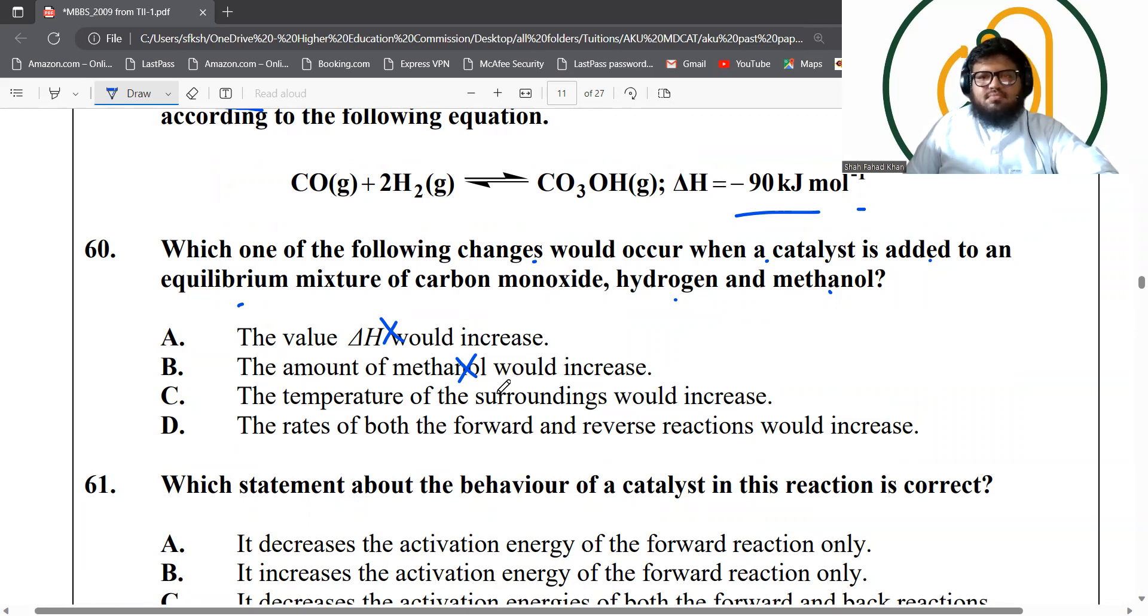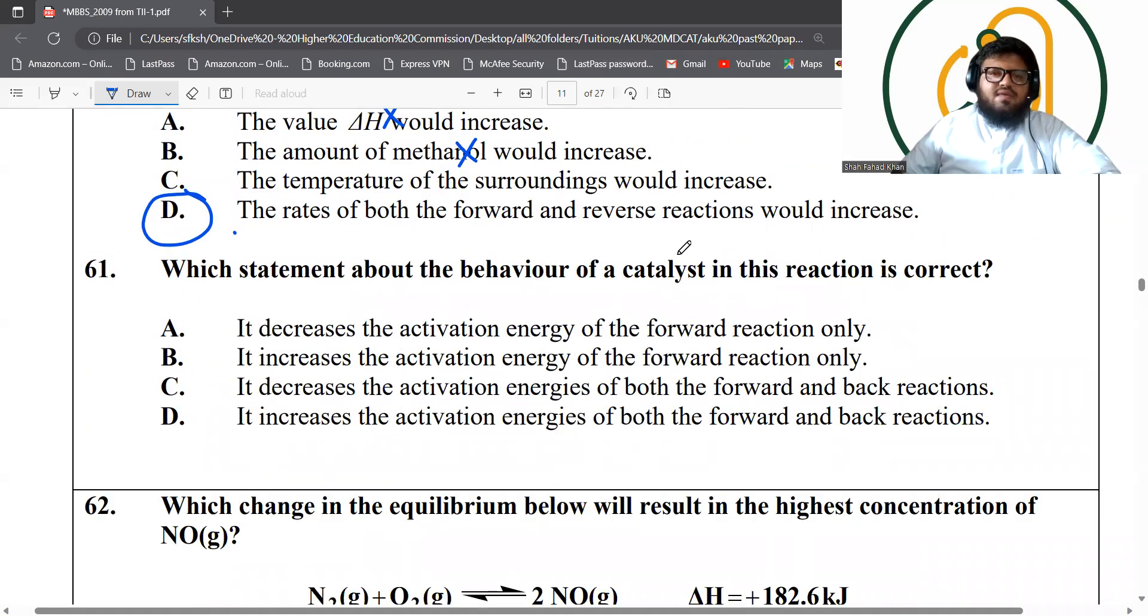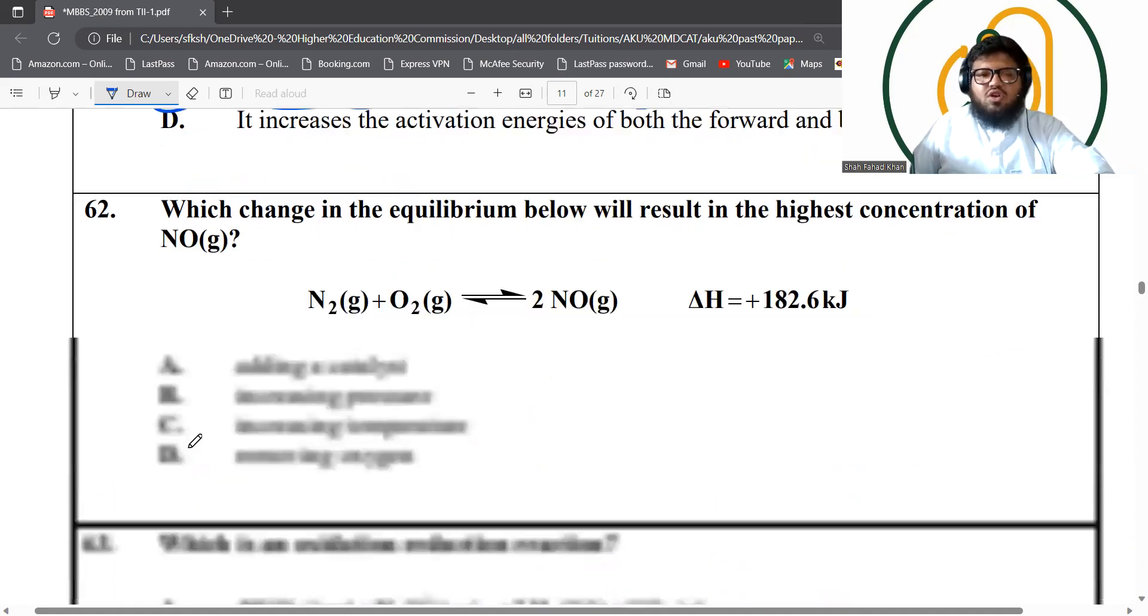Temperature, again, the rate of both forward and backward reaction would increase. That's the best answer. This statement about the behavior of a catalyst in this reaction is correct. Catalyst lowers the activation energy of both the forward as well as the backward reactions. Not just forward, not just backward.